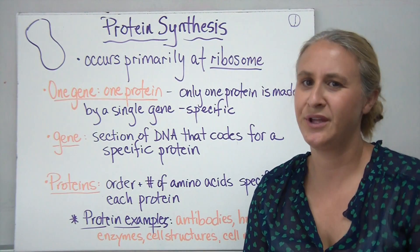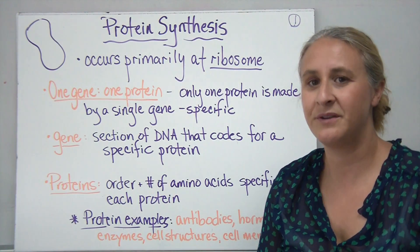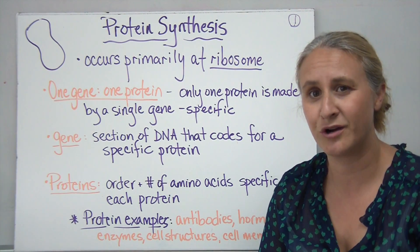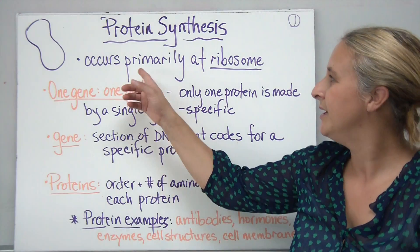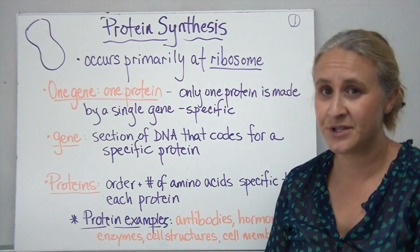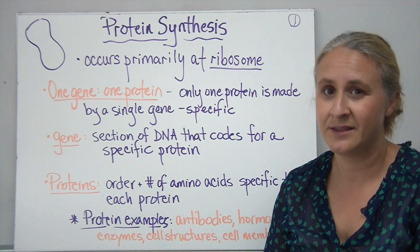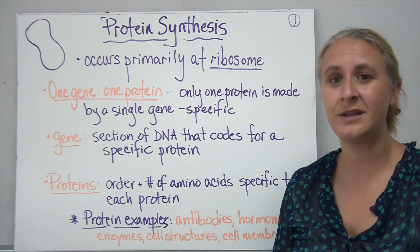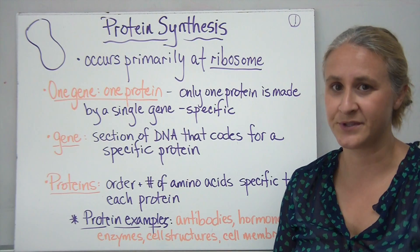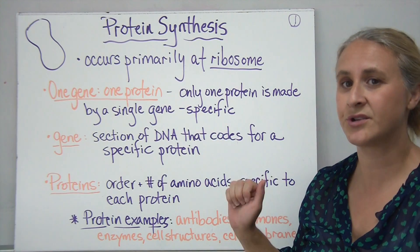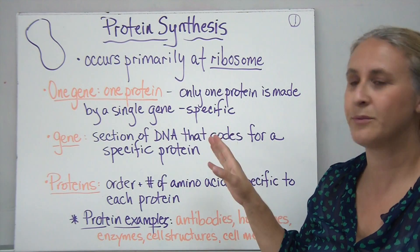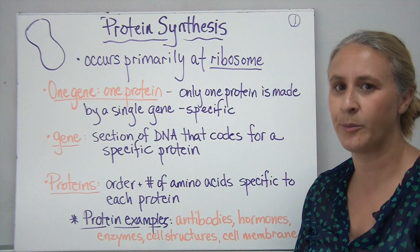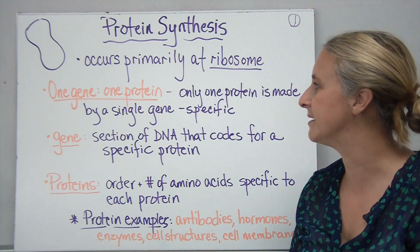As we've gone through our journey through the cell, we've talked about some of the organelles that occur in the cell. Today we're going to talk about protein synthesis, which is going to primarily deal with ribosomes. There are a few other structures involved, but the ribosome is the primary structure for protein synthesis.